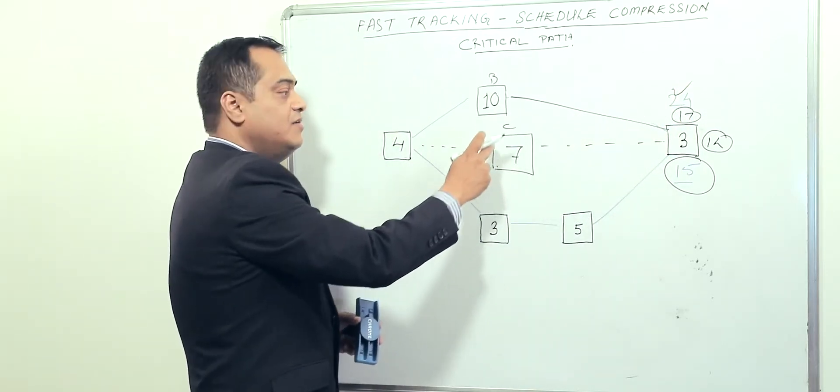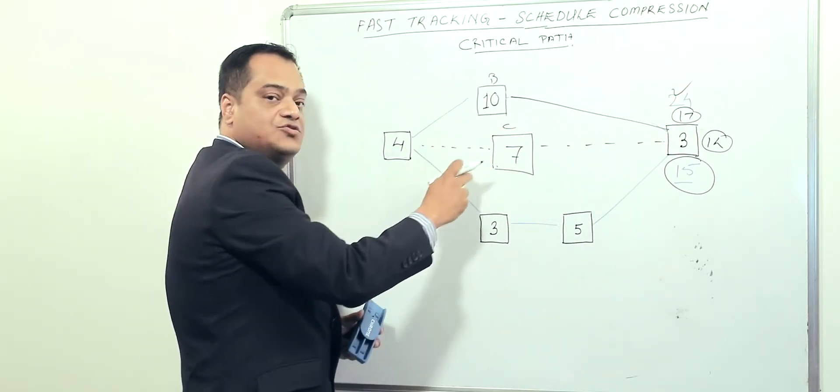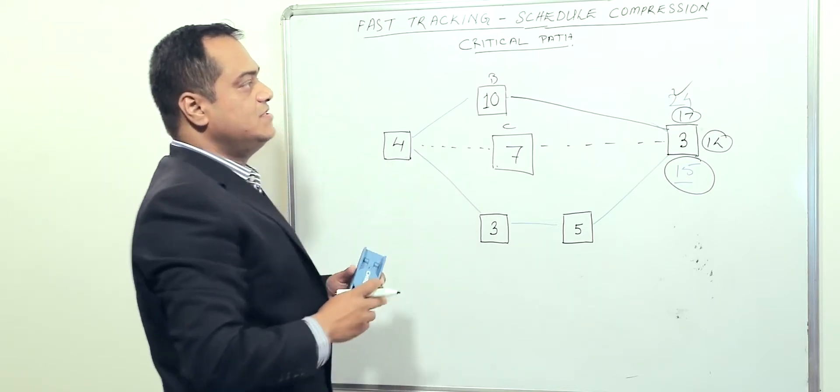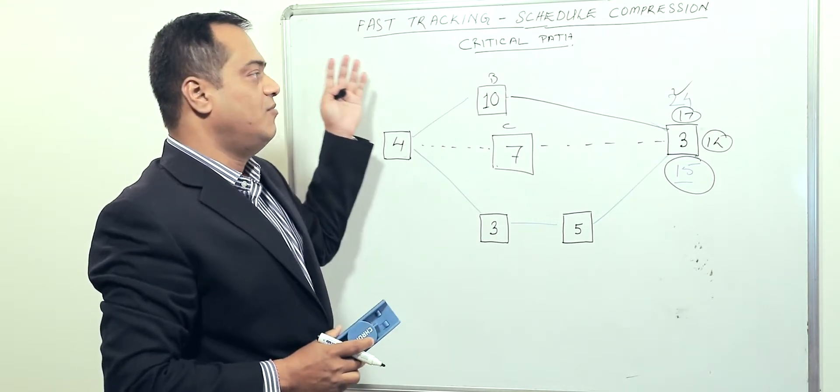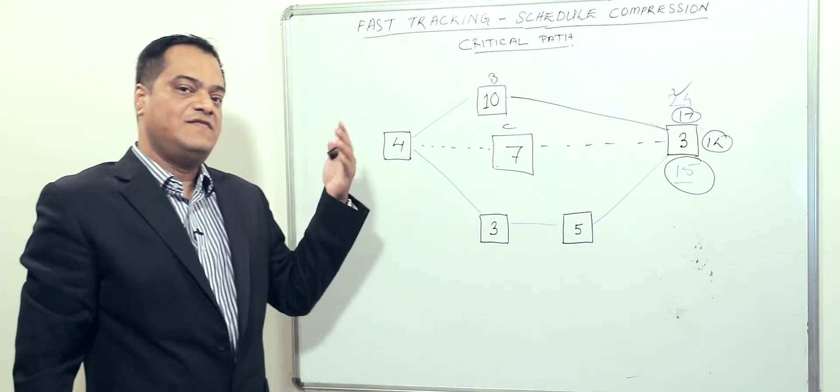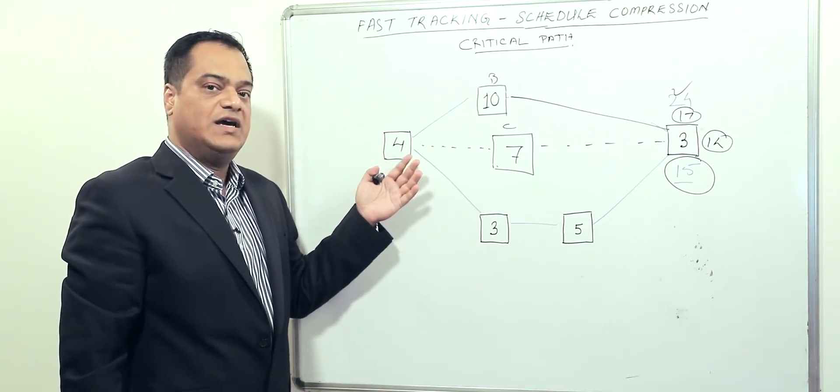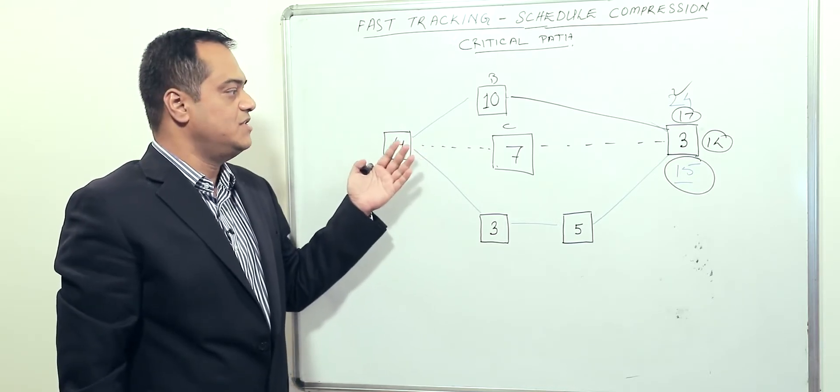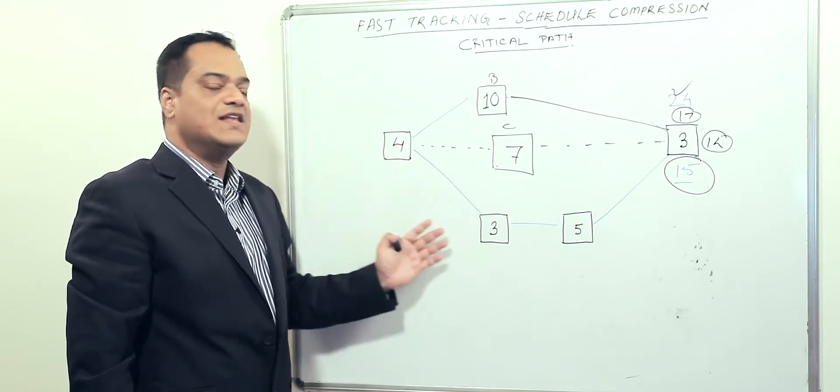You can see we've cut down from twenty-four to seventeen by running activity C in parallel to B. This is schedule compression by fast tracking. Obviously, this doesn't involve any costing, but you run into risk because now you have to rework the entire network and see if this is workable.